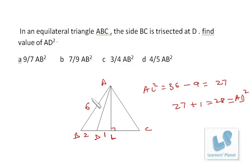Okay, now you know the value of AB, that is 6. Just put the value of AB in the options. Whenever you get 28 as AD square, that will be the correct option. So that's 9 by 7 into AB square, 36, you won't get an integral solution. 7 by 9 into 36, so 7 fours are 28.